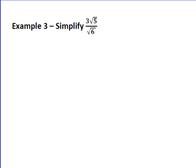Let's do one more example — this one gets a little bit harder, but deciding what to multiply by is always easy: whatever the square root in the denominator is, that's what you multiply by. On the top, I end up with three times square root of five times square root of six, which is just square root of 30. If you've got two square roots multiplied together, you just multiply those two numbers under the roots. Square root of six times square root of six is just six. Three and six cancel down to two in the denominator, so the answer is square root of 30 over two.